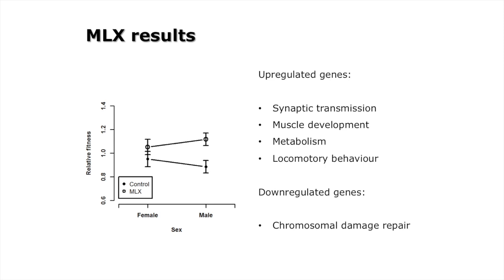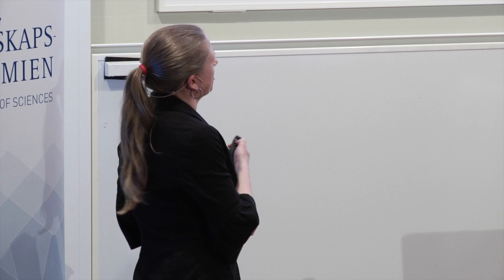When we looked at the male-limited X chromosome evolution, we found that males did increase in fitness compared to control males, but there wasn't really such a difference in the females. This makes sense based on the dominance assumptions — the stuff that's bad for females might be recessive, so they might not really be paying a cost of it anyway.